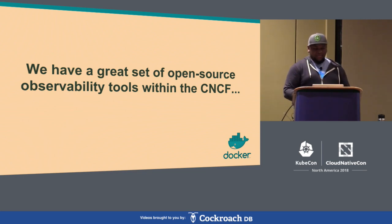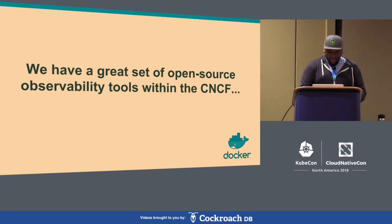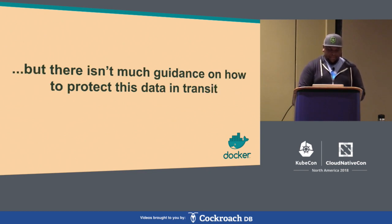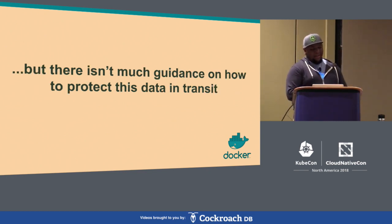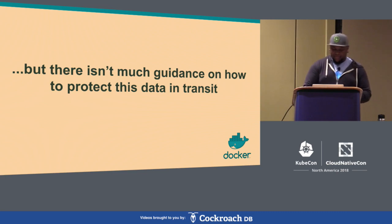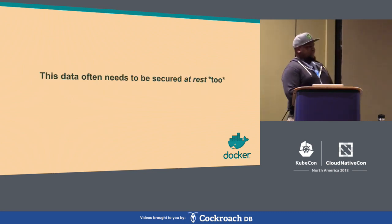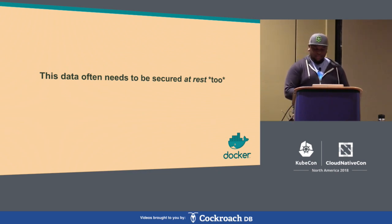We have a pretty large set of observability tools available in the CNCF — Prometheus, OpenTracing, OpenConsensus. But there isn't a whole lot of guidance on how to protect this data in transit. That assumes you're even aware that you should probably protect this information in transit in the first place. And some of this information really does need to be protected at rest, but that's a different talk.